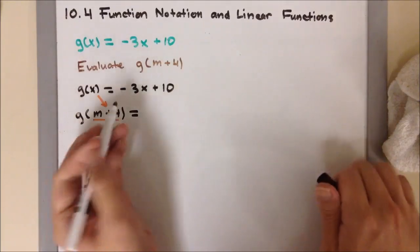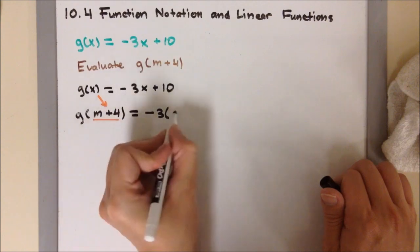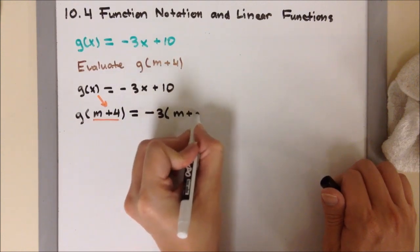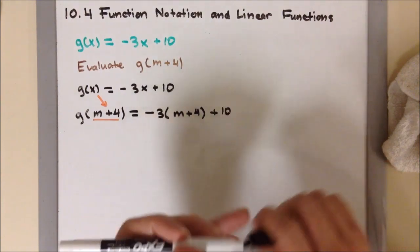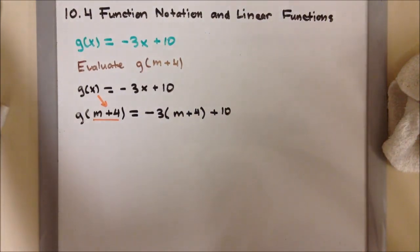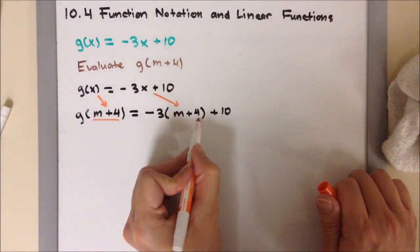So that means that I'm going to have my negative 3, parenthesis, m plus 4, and then bring out my plus 10. So again, all I did was switch out my x and then replace it with m plus 4.